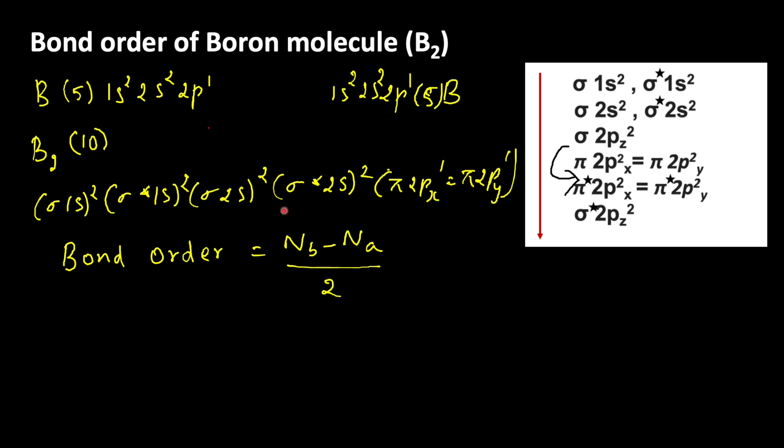For anti-bonding electrons, sigma star 1s2, so 2 electrons. Sigma star 2s2, 2 electrons. So, 4 electrons are present.